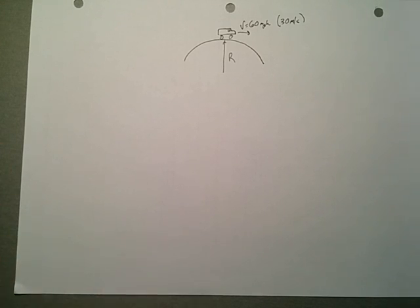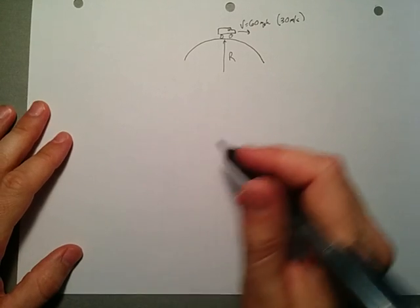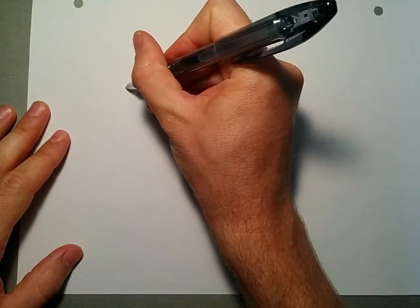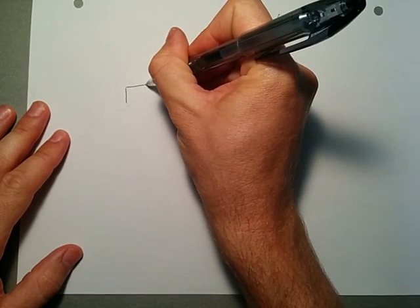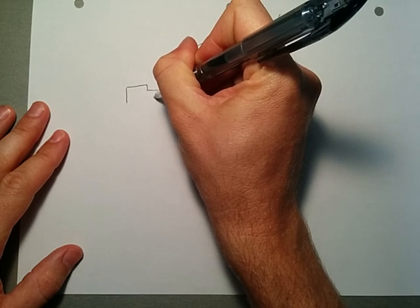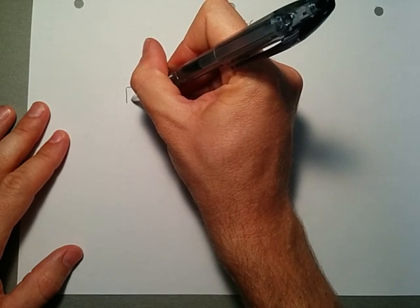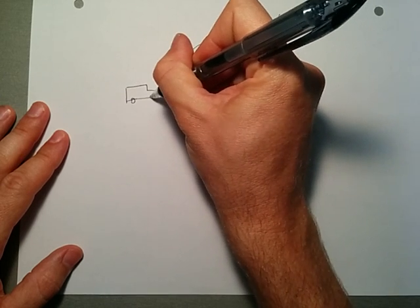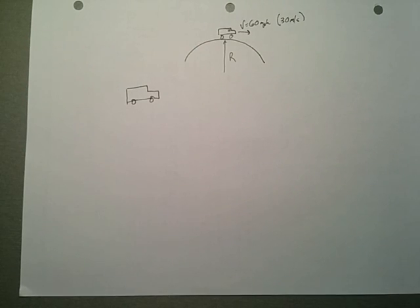First thing we want to do is draw a free body diagram. I want to make very clear, in this chapter on circular motion, there are no new forces. We've only included a special case where acceleration is in a circular motion. So there are no new forces. I want to make this very clear.